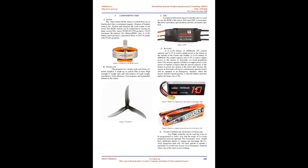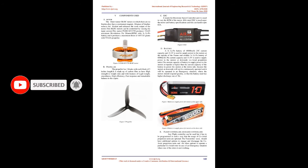Components used — Motor: The outer runner BLDC motors have no brushes and contain a permanent magnet. Absence of brushes reduces friction and enhances work output. These BLDC motors can be controlled by varying the input current. The motor P2208KV1750 produces 19,425 maximum RPM with a 3S LiPo battery and produces a maximum thrust of 1,457.83 grams with a T5143S propeller. Propeller: The propeller has 3 blades, each 5 inches in length. It is made of carbon fiber for high strength-to-weight ratio, with features of light weight, smoothness, high efficiency, fast response, and remarkable balance.